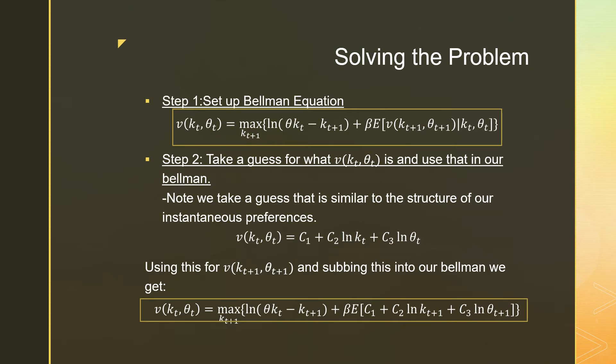So step number one, let's set up our Bellman equation. So from our problem, we're going to have this one over here, which is maximizing our consumption now, maximizing theta KT minus KT plus 1 plus beta, which is this discount factor times the expectation of this value function conditional on KT and theta T.